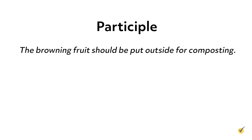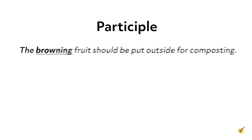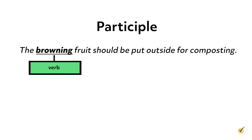Here's a sentence that contains a participle: 'The browning fruit should be put outside for composting.' We generally think of the word browning as a verb, but in this case browning is being used as a present participle, noted by the -ing ending, to modify the noun fruit.